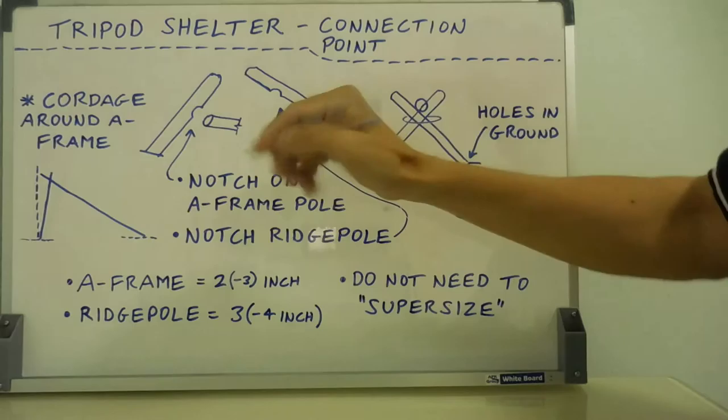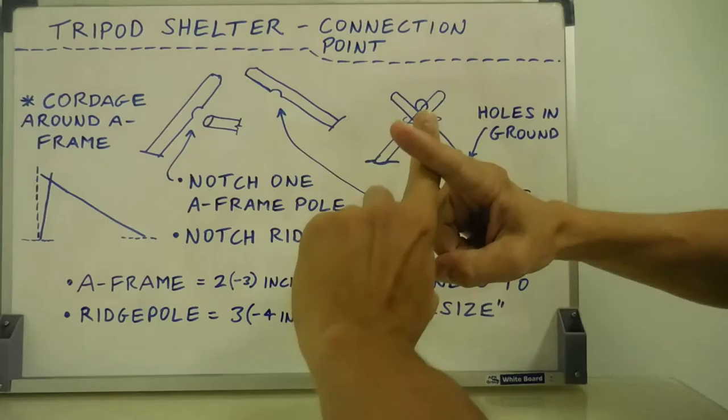Here's a few more key points about the connection point for the tripod shelter. You need to at least notch one of the A-frames at the end where the overlap is, so the other A-frame pole will just sit in nicely to prevent slippage.